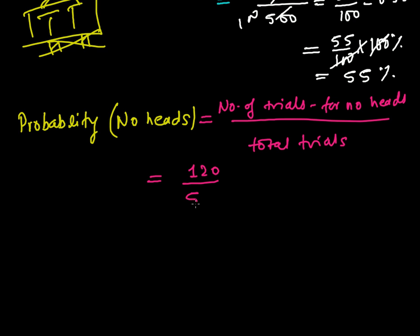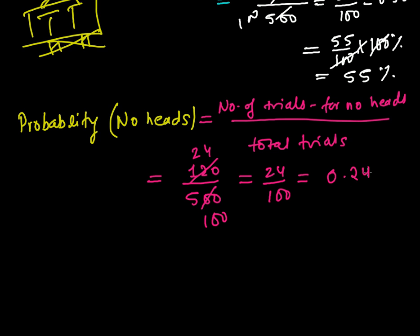Simplifying 120/500 — divide both by 5: that gives 24/100. In decimal it's 0.24, and in percentage, multiply by 100 to get 24%. So the probability of no heads is 24%.